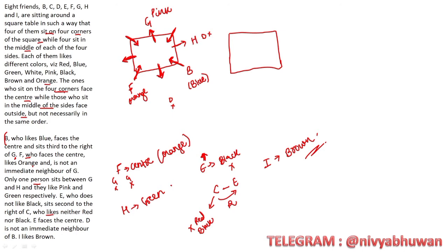If I put H green, then if I put H here, when I find E is facing inside, E is facing inside. C is second to the right. If I put H here, second to the right.